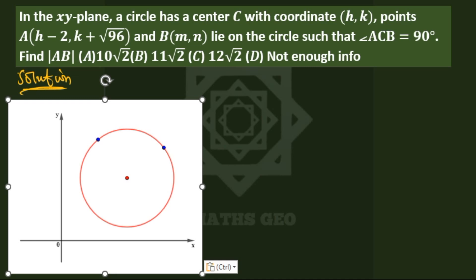This is the center of the circle, the center with coordinates (h, k), but we'll have two points A and B. So let's call this h minus 2, meaning that here will be A because we have h minus 2.